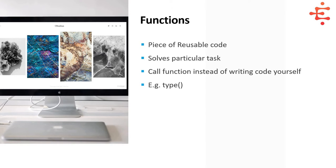For example, if we have a function named 'sum', it is going to add two numbers, three numbers, or multiple numbers. If we have a method named 'max', it is going to find the maximum of two or three numbers and so on. If we have a particular function, it is defined to do some particular task.